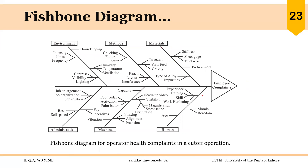Here is another example where the problem being targeted is employee complaints. We have different categories of causes. For example, the root causes identified in the case of environment include visibility, with two root causes: contrast and lighting intensity. If we can improve the contrast and intensity of lighting, visibility problems can be resolved — one of the issues related to environment is resolved and employee complaints can reduce.